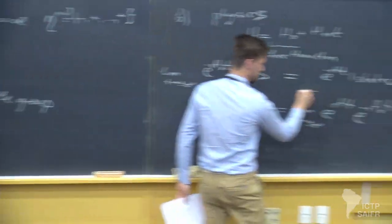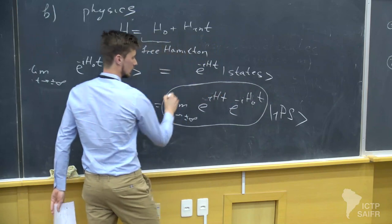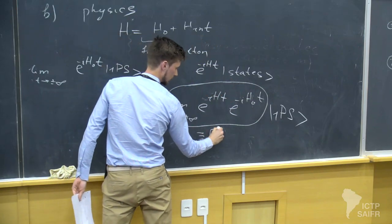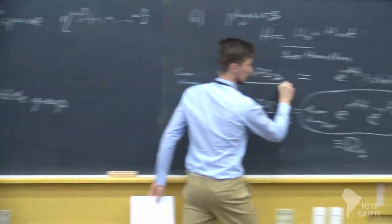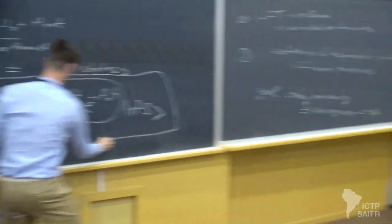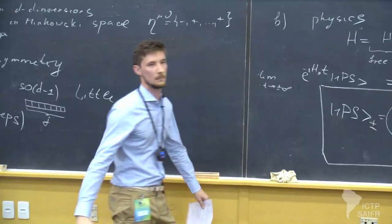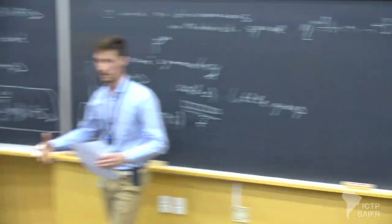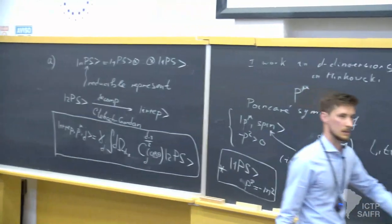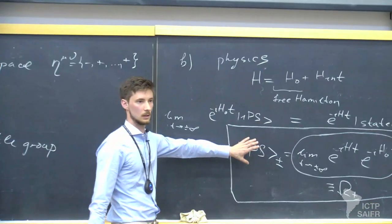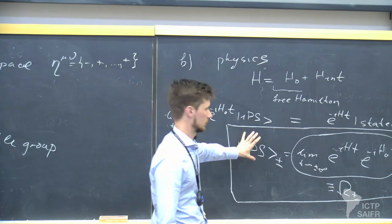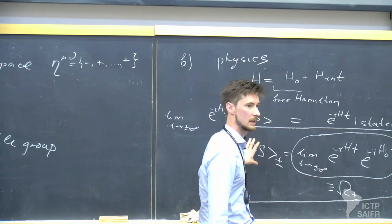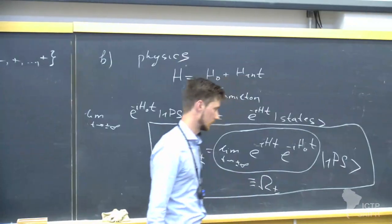This object here is called the Møller operator, which I denote by Omega plus or minus. You see, a one-particle state cannot evolve to something more complicated. Instead, the asymptotic states contain a lot of difficult information inside. The Møller operator basically provides a link between something very complicated and something simple.